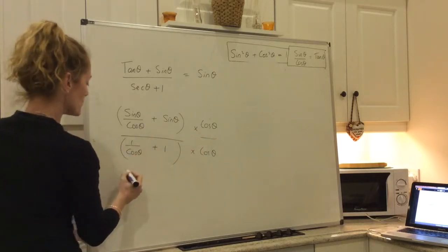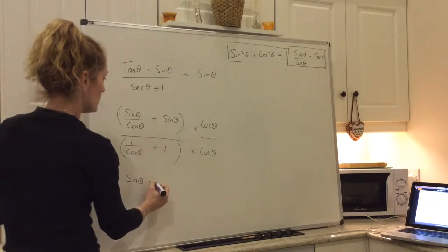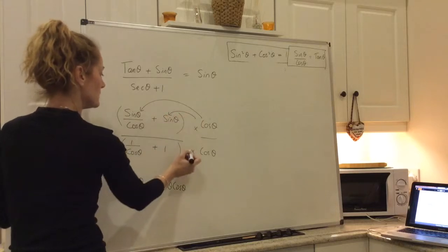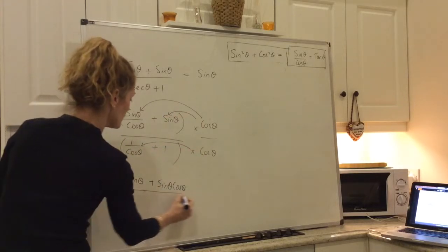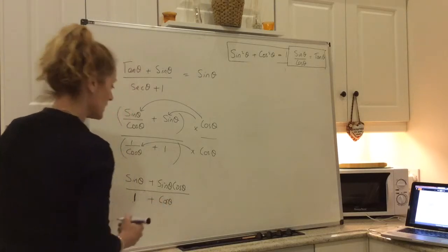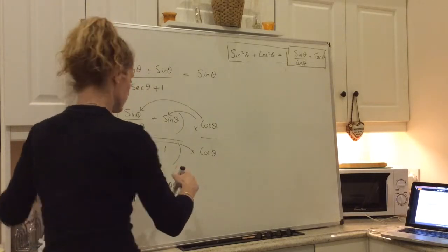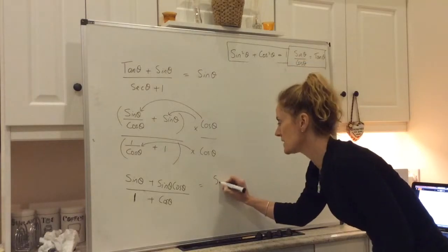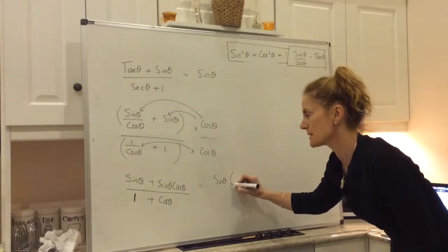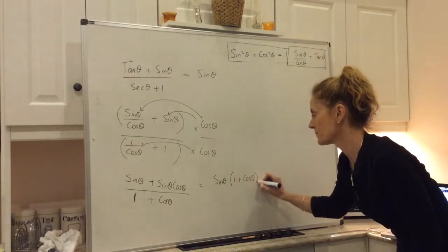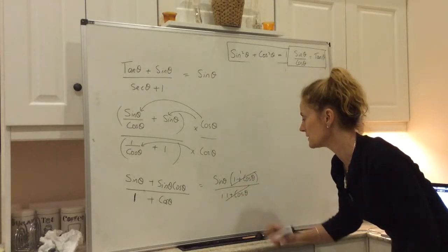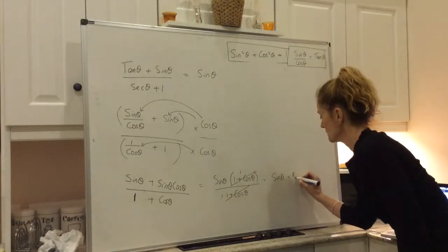We're going to multiply all of the top by cosine theta and all of the bottom by cosine theta — effectively multiplying by one, so we're not changing the value of the fraction. Cosine theta times sine over cosine gives you sine theta, plus sine theta cosine theta. Cosine theta times one over cosine theta gives you just one, plus cosine theta. Now factor out the sine theta on the top: you get sine theta times one plus cosine theta over one plus cosine theta. Divide the top and bottom by one plus cosine theta, and we get sine theta — equal to the right-hand side.